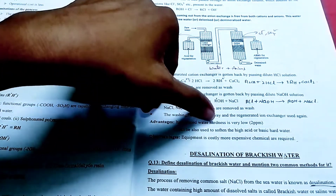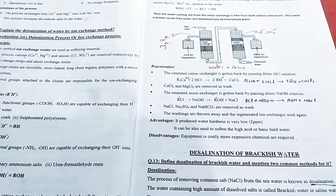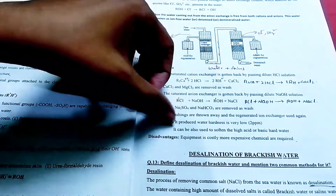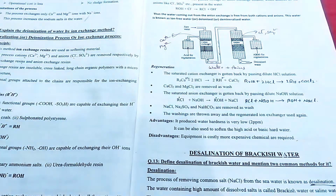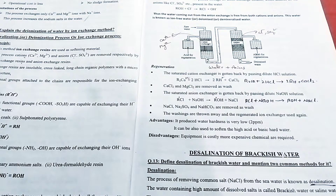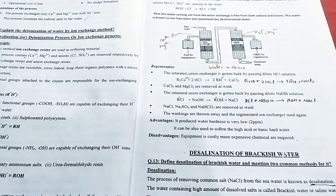It will also be used to soften highly acidic and basic hard water. If you have any water hardness, it will become very low. It can remove high levels of cations and anions. It will be used to deneutralize the process.